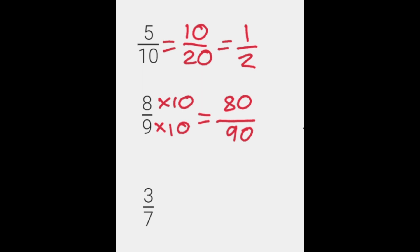We're going to do three sevenths now. We're going to multiply this by two — whatever you do the bottom, you do the top. Three times two gives us six and seven times two gives us fourteen. So six fourteenths is equivalent to three sevenths.